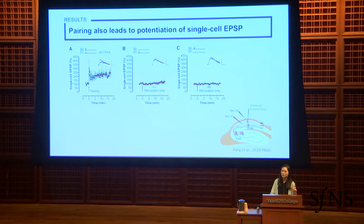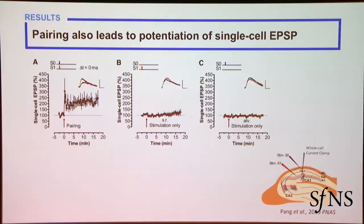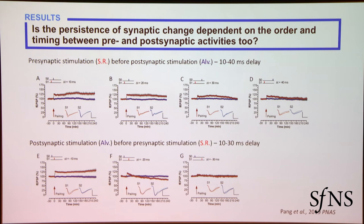Because with extracellular stimulation we can't precisely control the timings of neuronal spikes, we also validated our results with whole-cell patch clamp. Even at the single-cell level, when we give our pairing stimulation, we see a very instantaneous increase in synaptic responses. When we stimulate the Schaffer collaterals alone or the LVS layer alone, we don't see changes in synaptic responses.